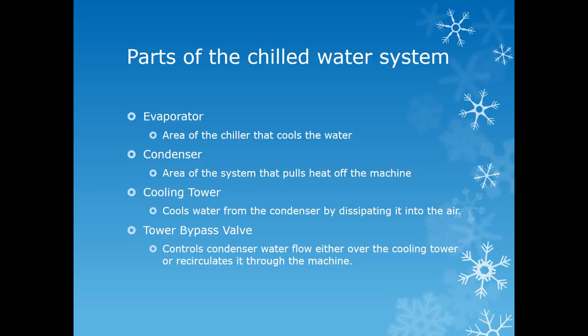This section contains the primary pumps and the secondary pumps which move water to the air handlers. The condenser side of the system is the area that pulls the heat off of the chiller itself. As these machines run they generate a lot of heat that has to be removed from them.